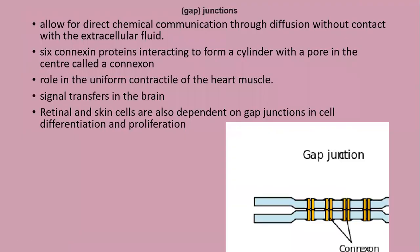Now moving to the other two types: gap junctions and tight junctions. The anchoring junctions we discussed connect or anchor cells. Gap junctions are also called communicating junctions because they allow chemical communication through diffusion, but without contact with the extracellular fluid.